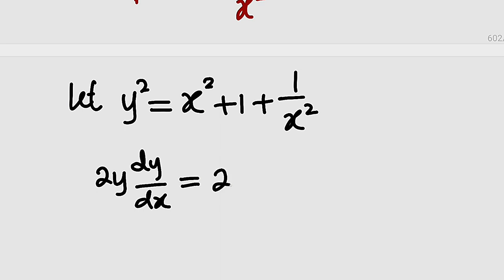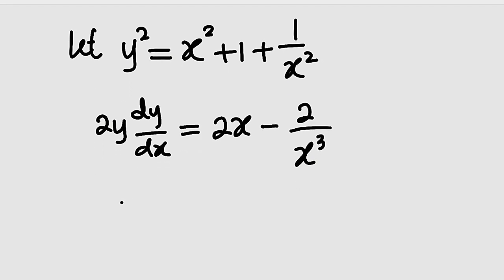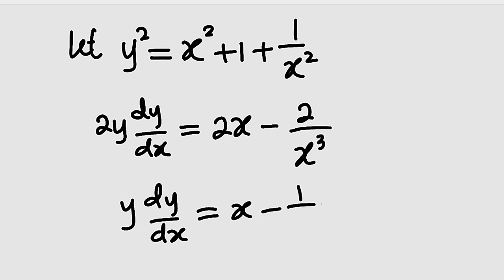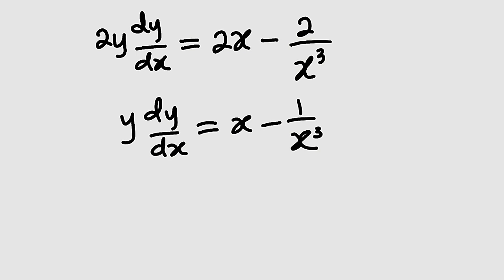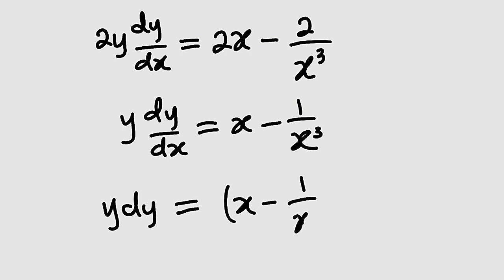The right-hand side: differentiating x squared gives 2x, differentiating 1 gives 0, and differentiating 1 over x squared gives negative 2 divided by x to the 3rd power. We divide both sides by 2, so we have y dy over dx equal to x minus 1 divided by x to the 3rd power. Multiplying both sides by dx gives y dy equal to x minus 1 divided by x to the 3rd power, multiplied by dx.